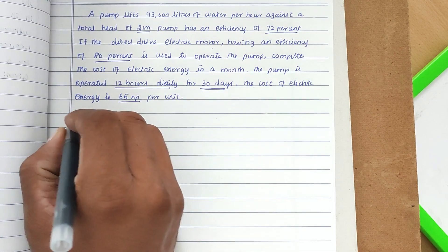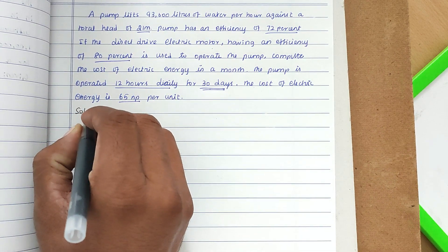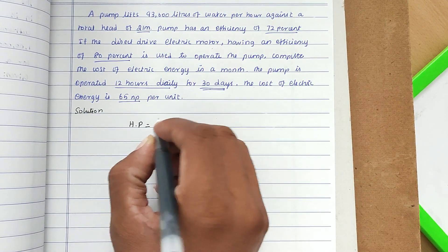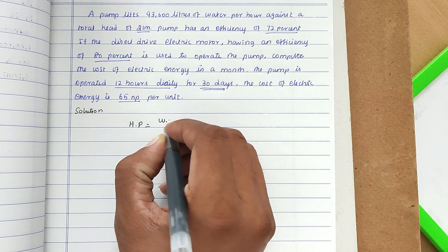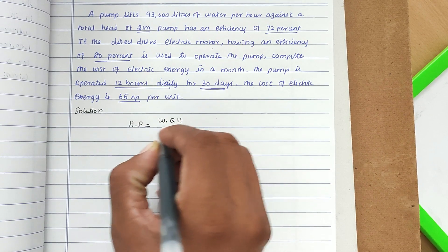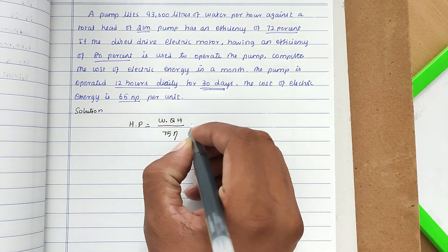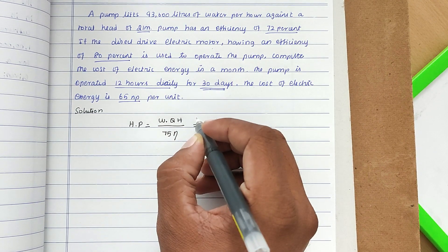Solution: horsepower HP equals, the formula is W × Q × H divided by 75 × η. Now we can substitute all the values.